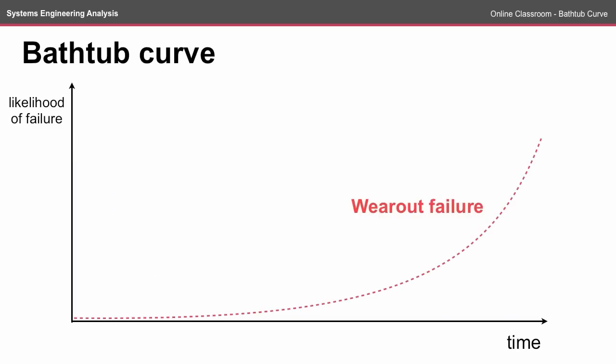A second mode of failure is wear-out failure. This is typical in a mechanical system, for example, where over a long period of time parts get worn and failure occurs as a result of wear out.